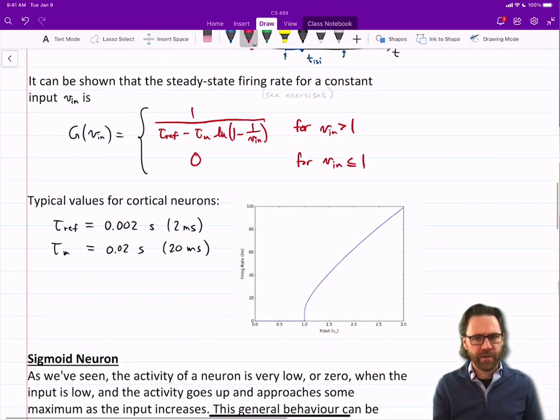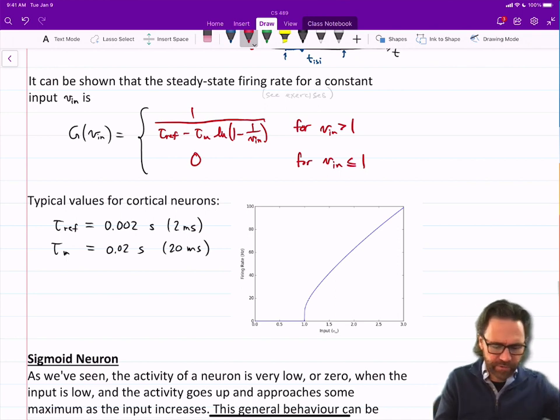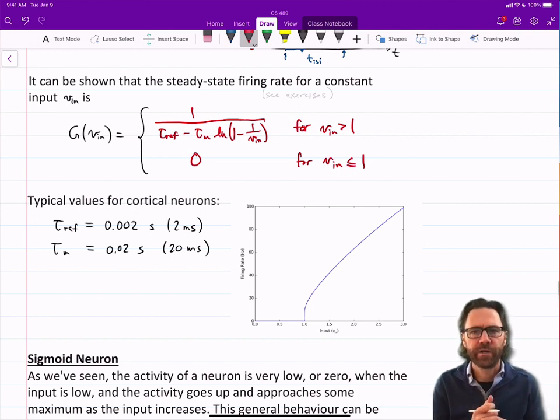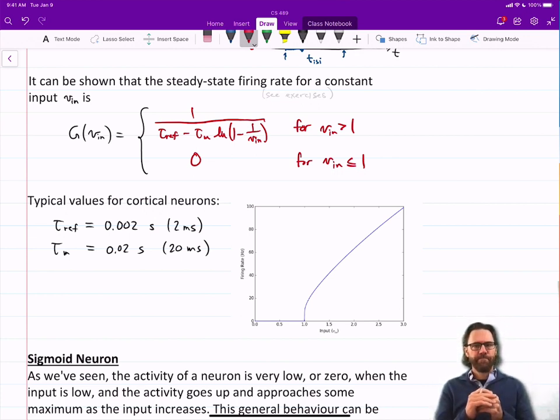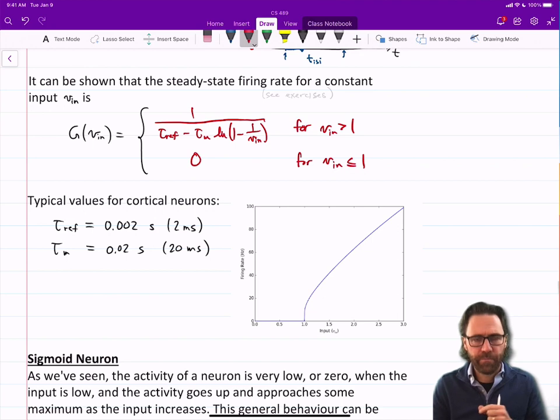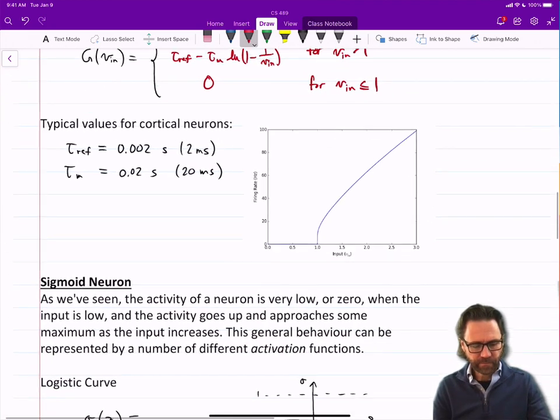Typical values for the refractory period is about two milliseconds. And the membrane time constant, about 20 milliseconds. It depends on the neuron, actually. But in terms of getting reasonable numbers for running these simulations, 20 milliseconds is around the right range, anywhere from like 10 to 50 or 100 milliseconds. By the way, in the exercises, I do have a simulation or some code that simulates the leaky integrate and fire neuron.